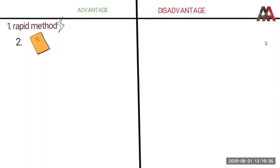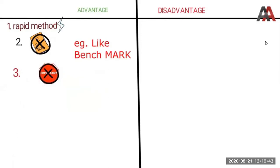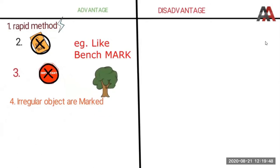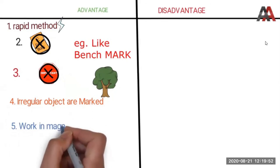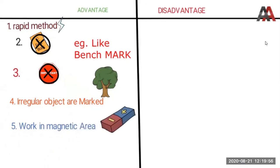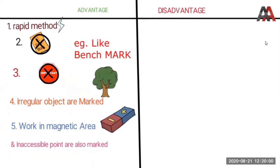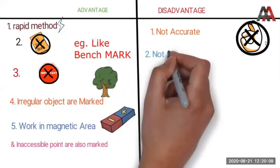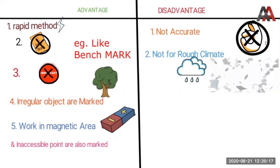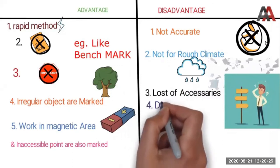Now we will talk about the advantages and disadvantages of plane table surveying. The advantages are: it is a very rapid method of surveying; we do not need a field book; we can represent irregular objects on paper; it works in magnetic areas because there is no chance of magnetic errors; and we can also plot inaccessible points. The disadvantages are: the plane table is not suitable for accurate work; it cannot be used in wet, rainy, or windy weather because the paper gets damaged; and all the instruments are expensive and difficult to carry.